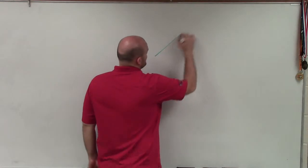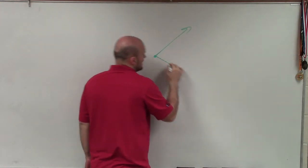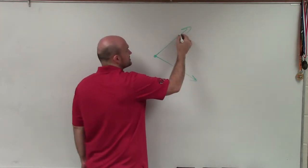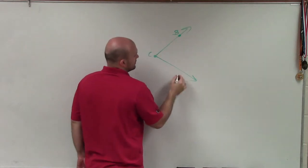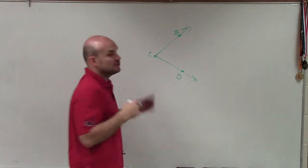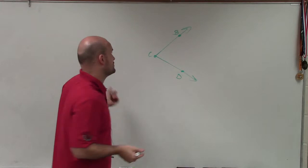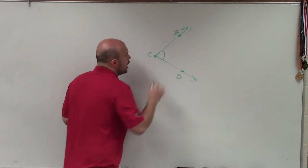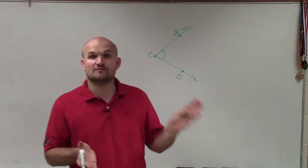Basically, an angle is formed when we have two rays that share a common endpoint. You can see there's going to be an angle. A lot of times we represent an angle and we draw an arc between the rotation of the two rays.